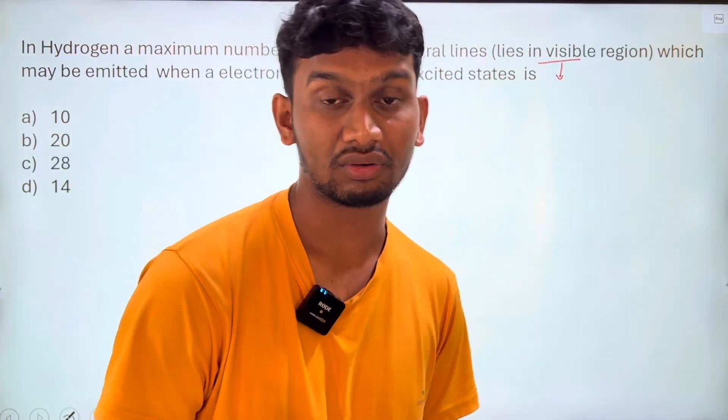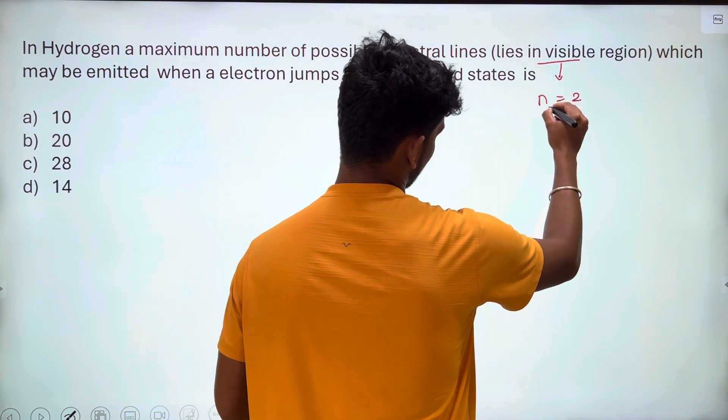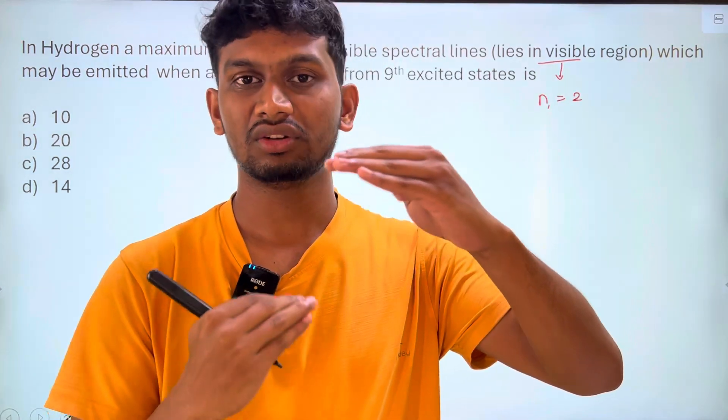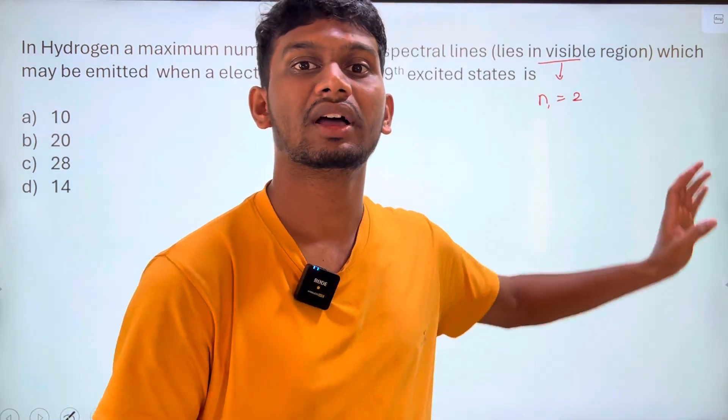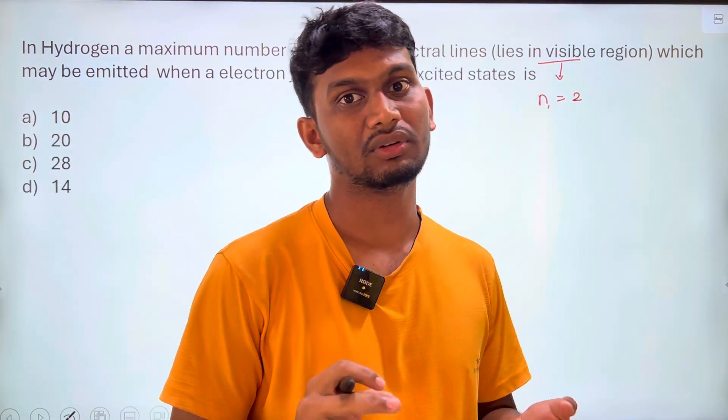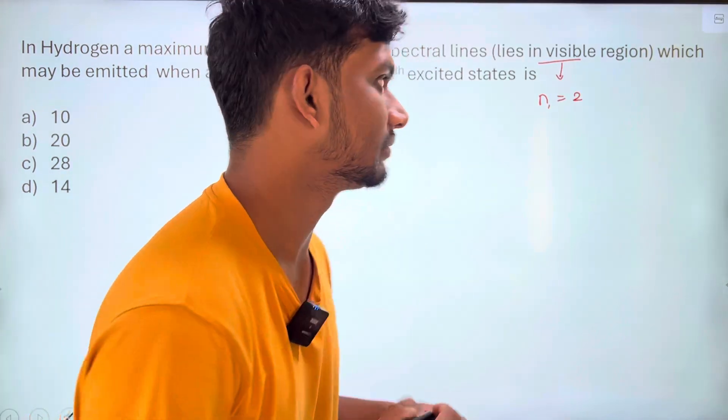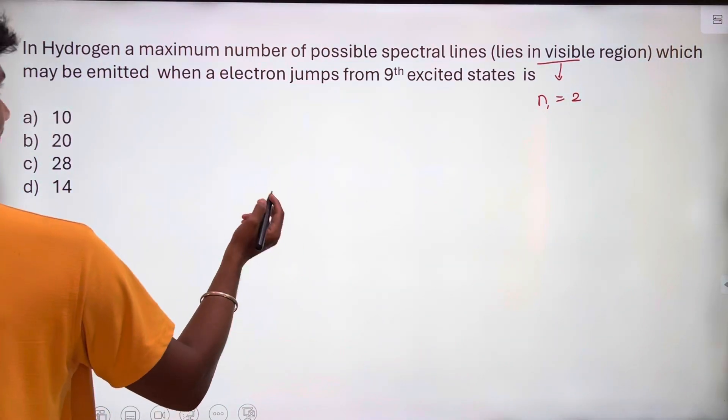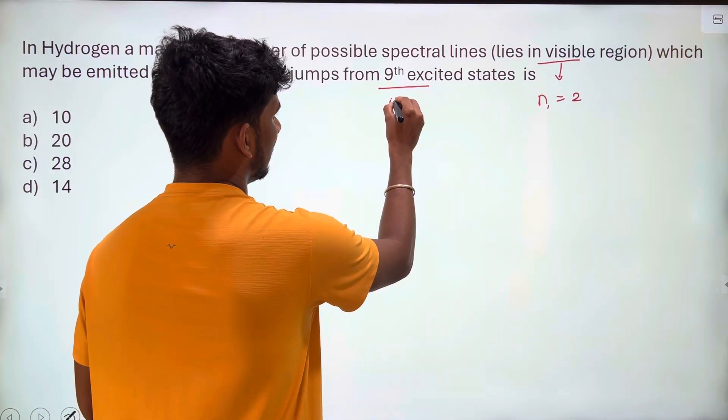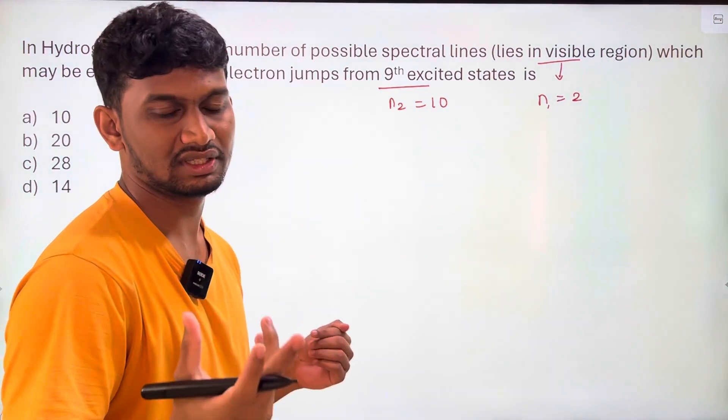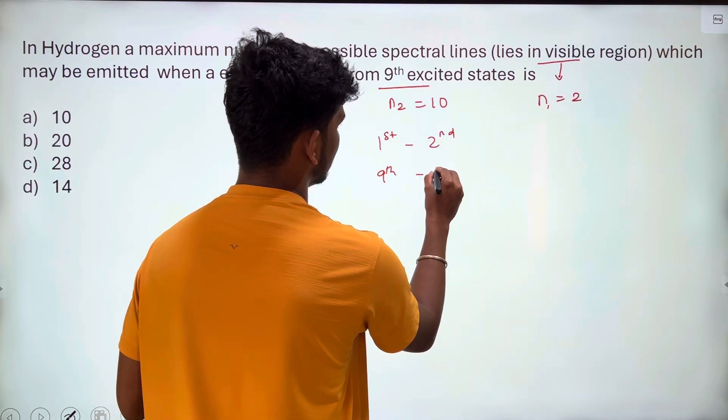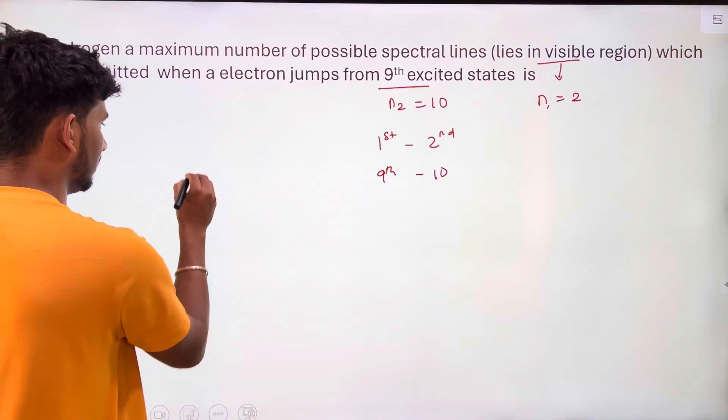The visible region, what is the total number in visible region? For hydrogen atom, visible region means n1 is equal to 2. It's alright, visible light has a particular energy and wavelength. For hydrogen atom, n2 falls in the visible region. 9th excited state means n2 equal to 10. Excited state 9 means orbit 10, correct. In first excited state, second orbit, similarly 9th excited state is 10th orbit. n2 equal to 10, n1 equal to 2.